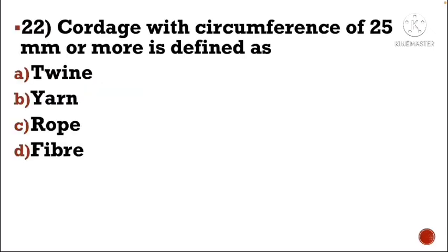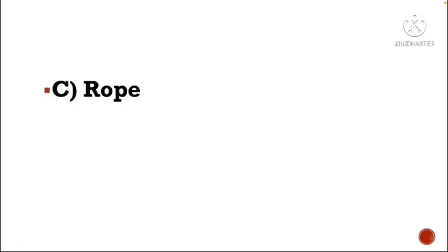Next question: Cordage with circumference of 25 mm or more is defined as — Option A: twine, Option B: yarn, Option C: rope, Option D: fiber. The correct answer is Option C, rope.